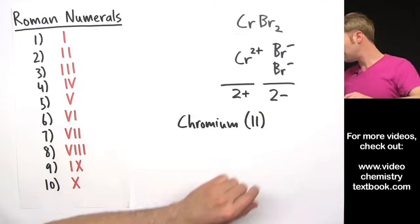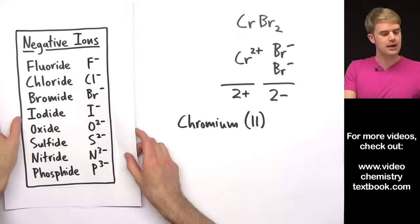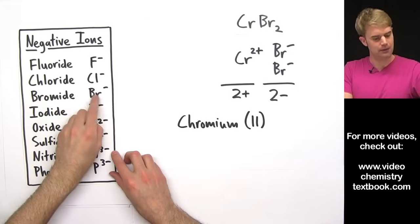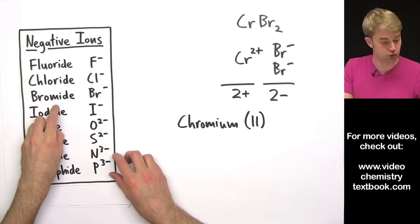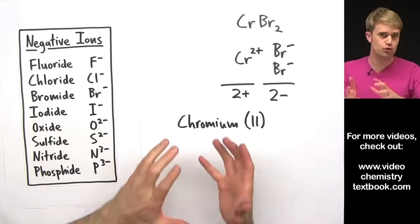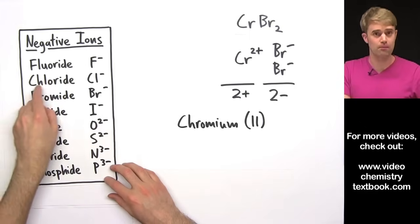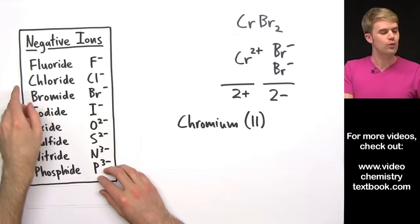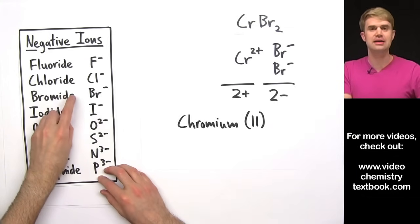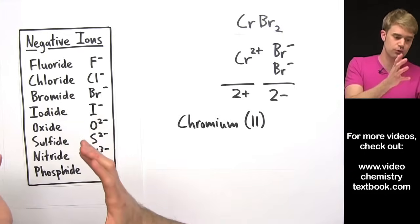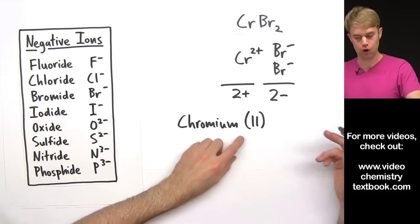Now we need to say what its charge is, and we do this using Roman numerals in parentheses. So it's Cr2+, so we're going to use the Roman numerals for 2. So there's the 2, and now what do we call Br here? Well, the negative ion, Br minus, is called bromide. The neutral compound is called bromine, and so when it becomes a negative ion, we change the ending to -ide. So the neutral version is bromine, and that changes to bromide.